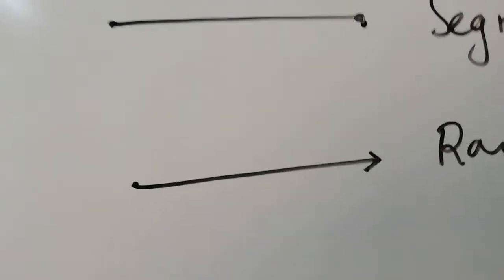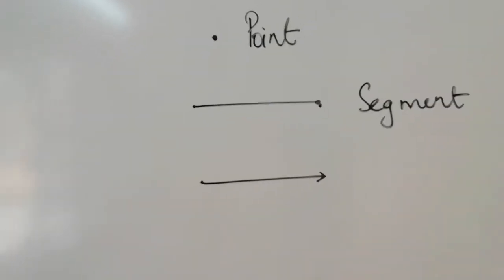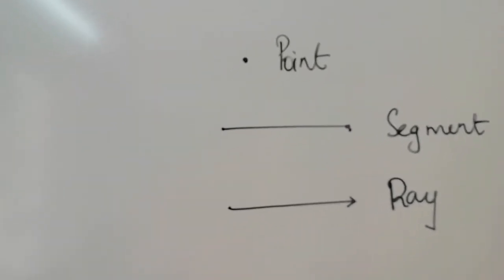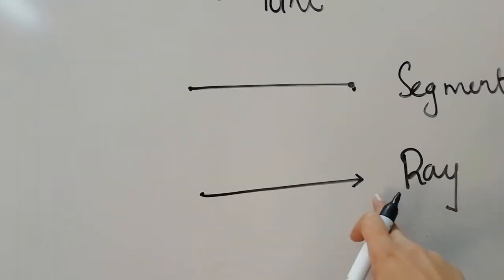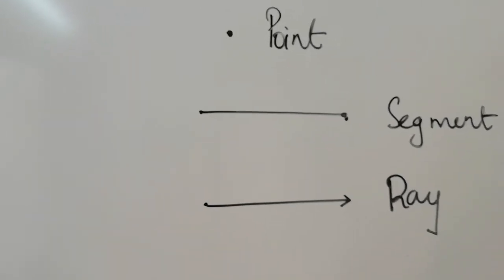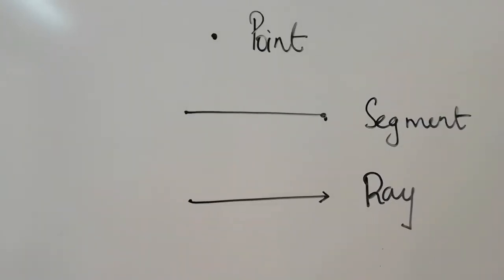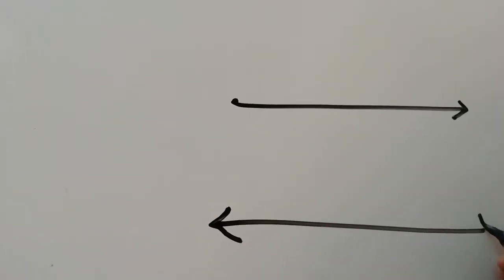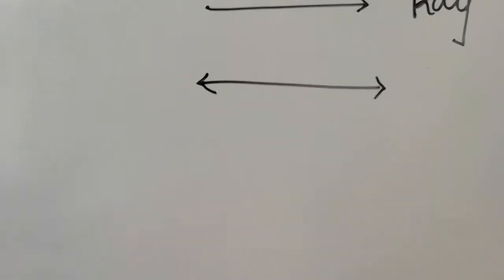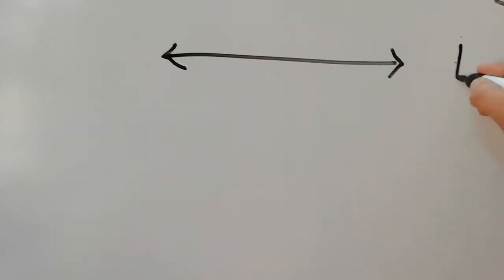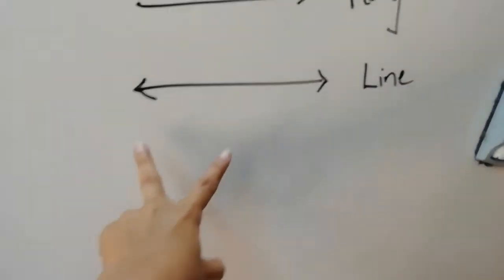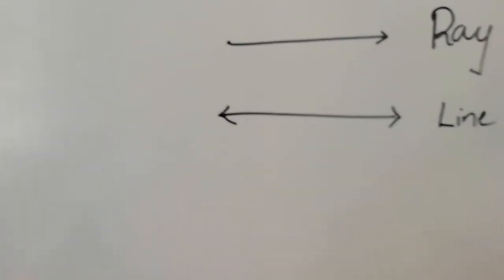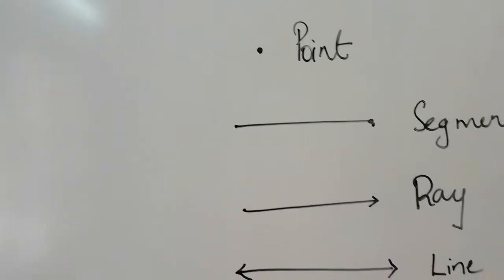What is this shape called? This is called a ray. A ray has a starting point but it doesn't have an ending point. An arrow indicates that a shape doesn't have an ending point — it can extend infinitely. And this shape is called a line, indicated by arrows on both sides, meaning it can extend infinitely on the left and right.